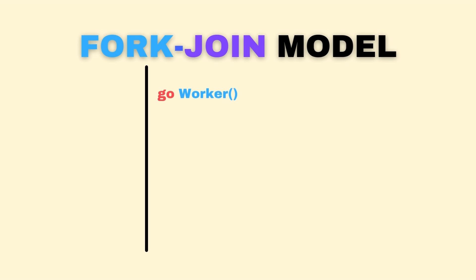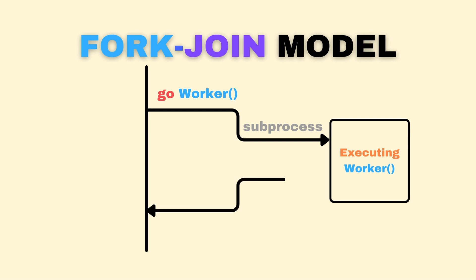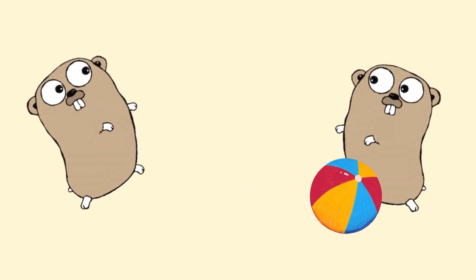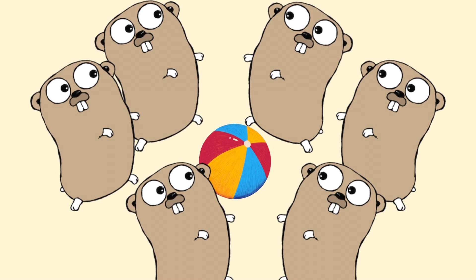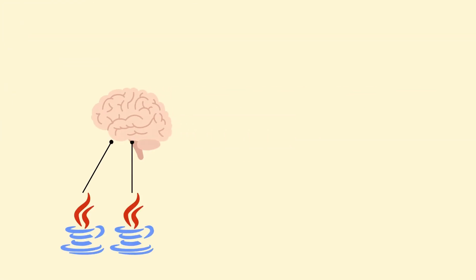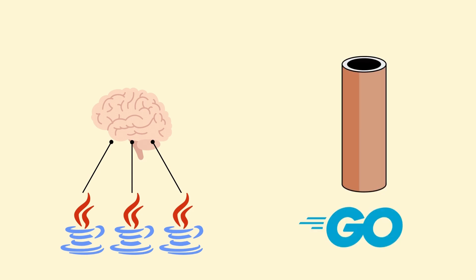Go routines work in a fork-join model. If you add the 'go' keyword in front of a function, it is treated as a Go routine. This function during runtime is run in a separate subprocess — it forks off from the main runtime. When it is done executing, it joins back to the main function. But sometimes you need data running in one Go routine passed into another. In Java you have shared memory, which makes concurrency slightly difficult, while in Golang you have channels.